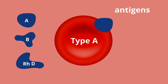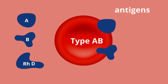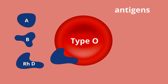If you have blood type A, you have A antigens on your red blood cells. If you have blood type B, you have B antigens on your red blood cells. If you have blood type AB, you have A and B antigens on your red blood cells. And if you have blood type O, you don't have either A or B antigens on your red blood cells.